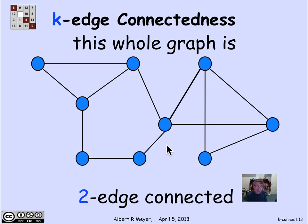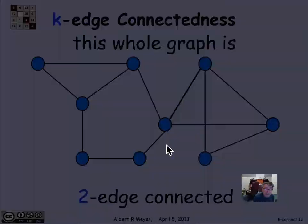This graph on the other hand, a modification of it, is 2-edge connected. Now I can remove any one edge, and no matter what single edge I remove, this will remain a connected graph, which makes it 2-edge connected.